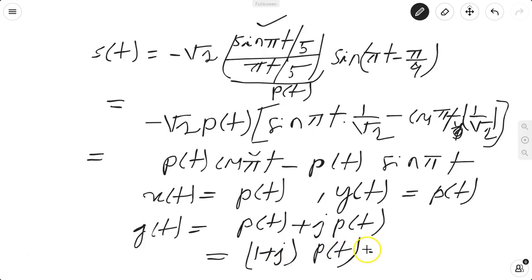They haven't given it in the options. You find the magnitude and phase. So magnitude is √2, phase is e^(jπ/4), and p(t). This is your answer.